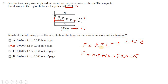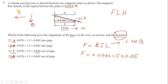Using Fleming's left-hand rule: point the first finger in the direction of the magnetic field (downward), the second finger in the direction of the current, and the thumb points out of the page — outward. So the force is directed out of the page, and the answer is option C.